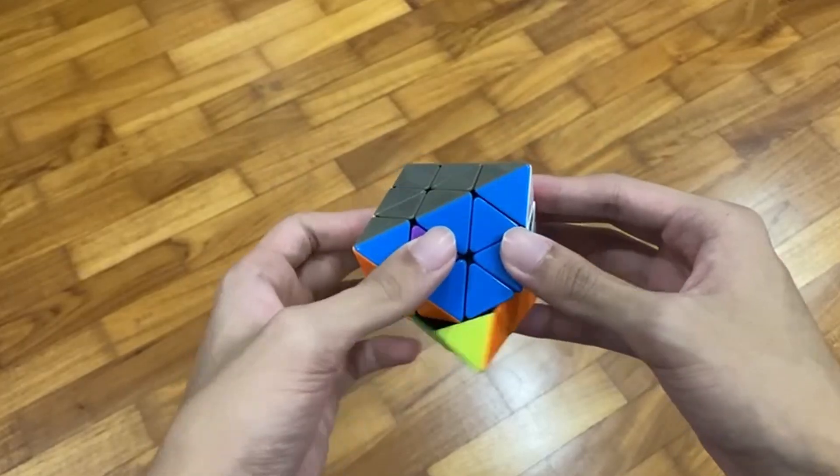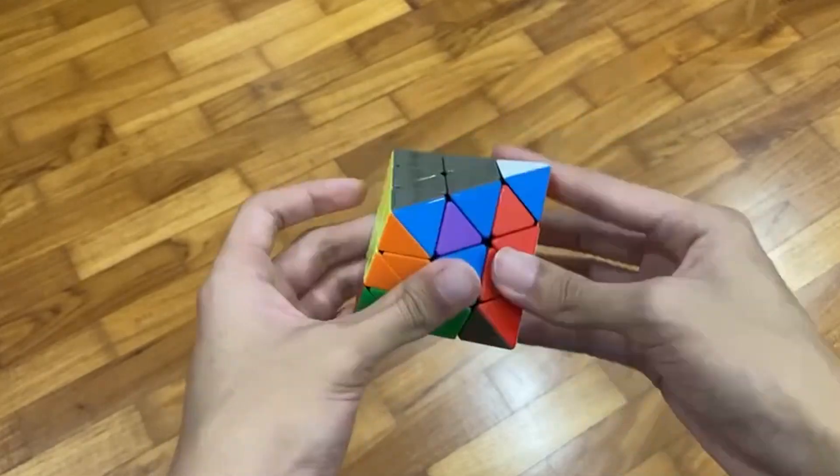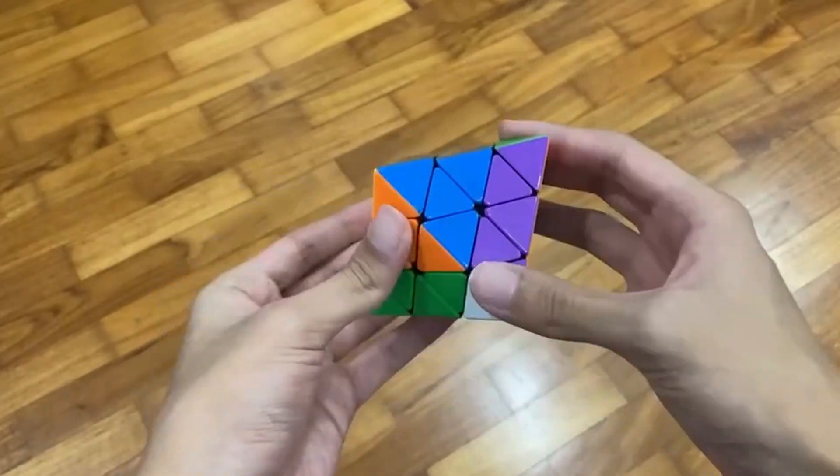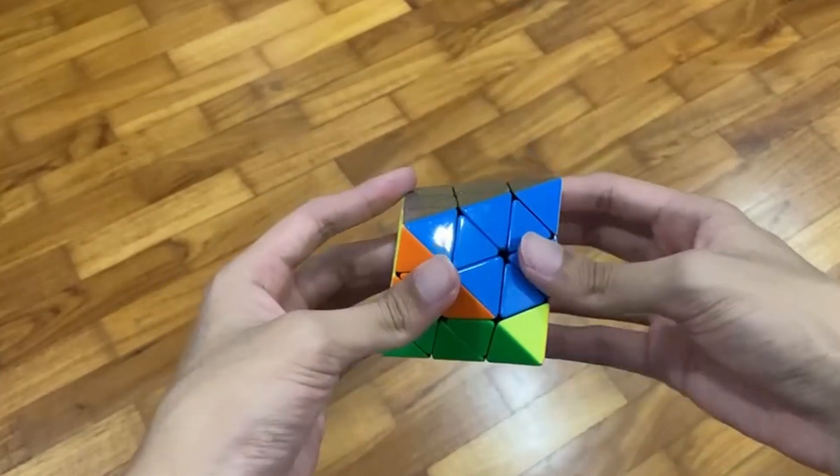then do a D and an R move. And you take out the pair, do an M slice, insert everything. And you just undo your R and your D moves. And you're done solving the FTO.